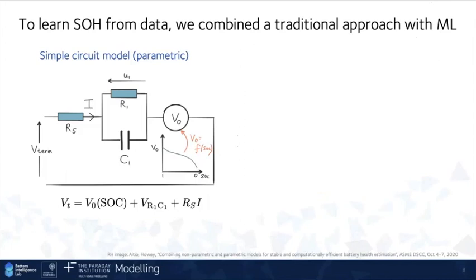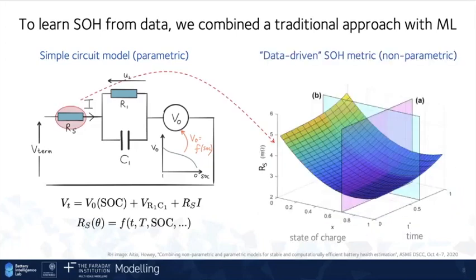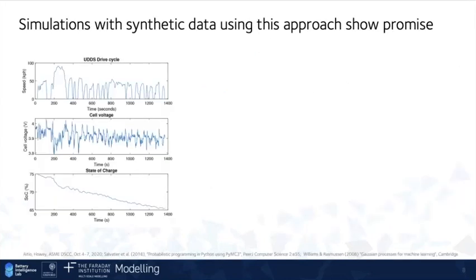So as I mentioned, what we wanted to do is try and use these model-based techniques, but use resistance as a health metric, but we need to somehow correct for the fact that there is this instant variability of state of charge and current and temperature, etc. So we actually, in this case, combined a simple circuit model approach with a machine learning approach. And the machine learning approach is what we use to learn the shape of this function for resistance. And machine learning is very good at learning functions from data. So what we did here is we just express the resistance as a function of time, temperature, state of charge, current, etc. And then we use a technique called Gaussian process regression, which I won't go into, but I'll show you some of the results to do this.